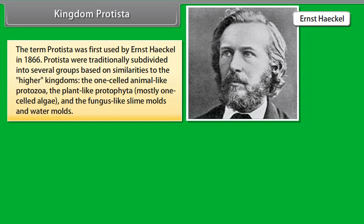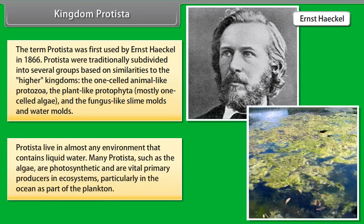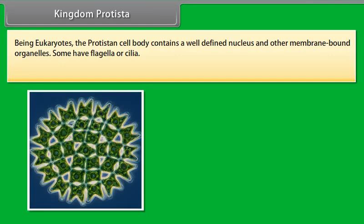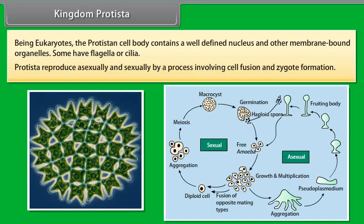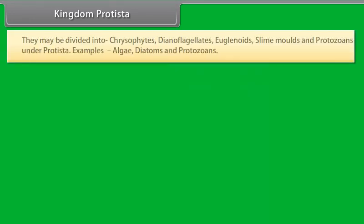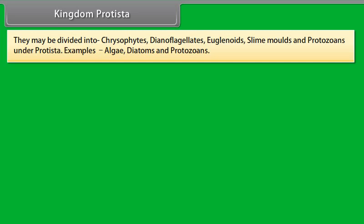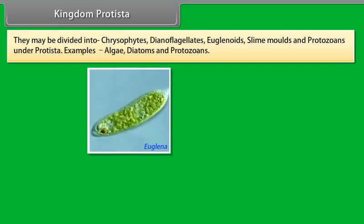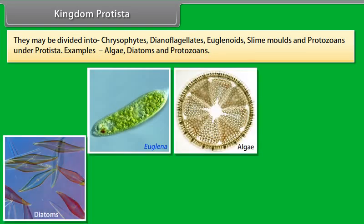Kingdom Protista. All single-celled eukaryotes are placed under Protista. The Protista have simple organization; either they are unicellular or they are multicellular without specialized tissues. This simple cellular organization distinguishes the Protista from other eukaryotes such as fungi, animals and plants. The term Protista was first used by Ernst Haeckel in 1866. Protista were traditionally subdivided into several groups: the one-celled animal-like protozoa, the plant-like Protophyta, mostly one-celled algae, and the fungus-like slime molds and water molds. Protista live in almost any environment that contains liquid water.